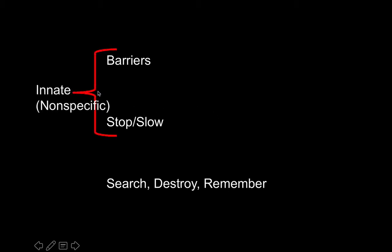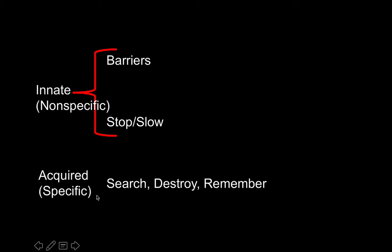You do not want anything to break through this third line of defense, because if something breaks through this, that means death. The first two lines of defense are part of your innate immunity — they're non-specific. The barriers and stop/slow things down protect you against anything and everything, not a specific bacteria or virus. Then you get into your acquired immunity, which is the third step, and this is specific.